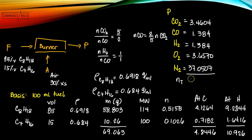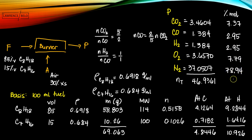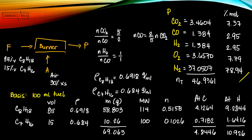Adding all moles of dry flue gas components gives a total of 46.9361 moles. The percentage by mole of each component in the exhaust gases: CO2 = 7.37%, CO = 2.95%, H2 = 2.95%, O2 = 7.79%, and N2 = 78.94%. That is your final answer.